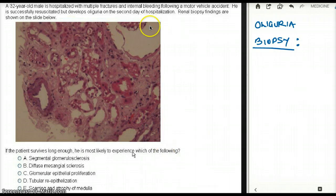So first of all, he got into an accident and he had a lot of bleeding. And the second day of hospitalization, he developed oliguria. Now, renal biopsy is shown.